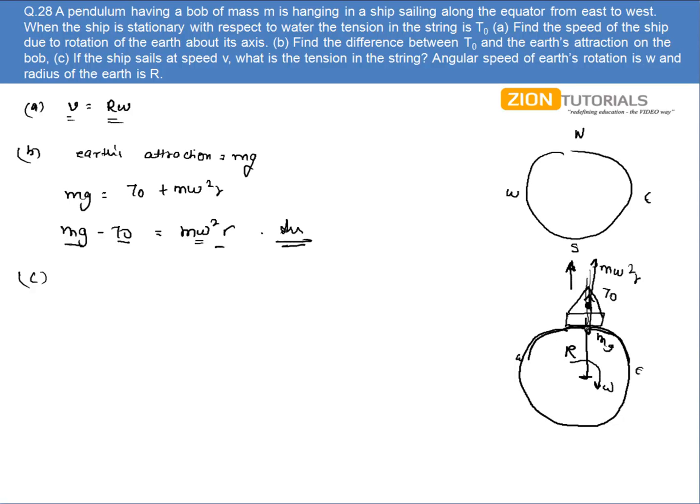So let's say the surface of earth or the surface of the ocean - the linear velocity of the surface of the ocean will be R omega. And the speed of the ship is v. So the relative velocity of the ship with respect to the earth will be given by v minus R omega.